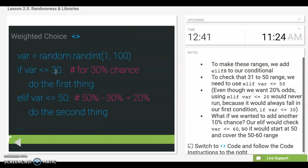Here's what that code would look like. Random number being selected between 1 and 100 being stored in the variable var. If var is less than or equal to 30, do the first thing.